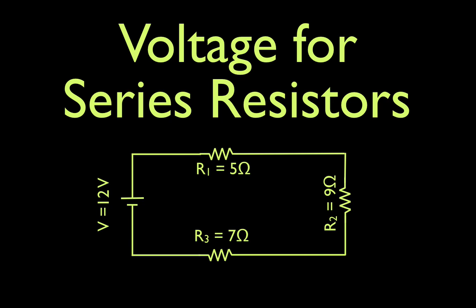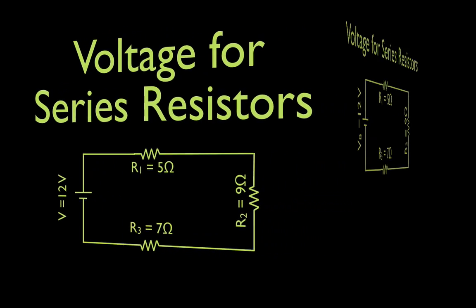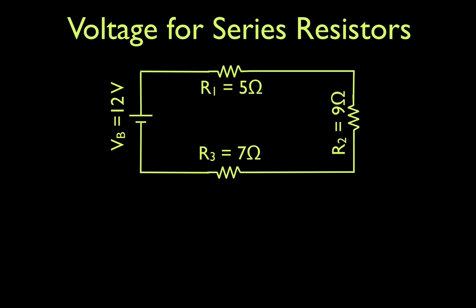In this video I'm going to go over voltage for series resistors, or resistors in series. Here is the circuit we're going to use. We have three resistors in series: number one is 5Ω, number two is 9Ω, number three is 7Ω, and we have a 12 volt battery.